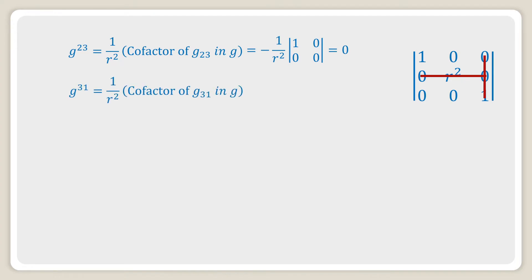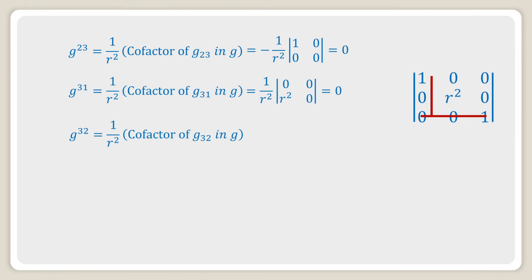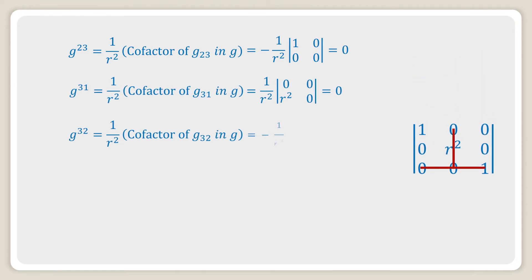Next, g^31 is equal to one over r² into the cofactor of g_31 in g, which is equal to one over r² into the determinant of 0, 0; r², 0, and this is also equal to zero. g^32 is equal to one over r² into the cofactor of g_32 in g, which is equal to minus one over r² into the determinant of 1, 0; 0, 0, which is also equal to zero.